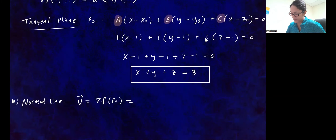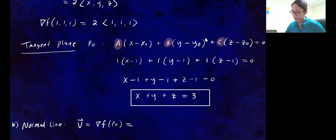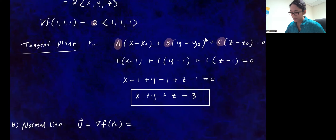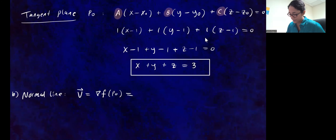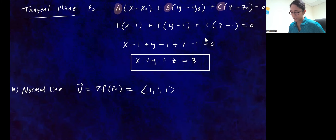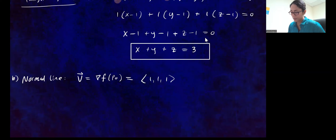We know that gradient vector is 2 times the components (1, 1, 1). You could use (2, 2, 2), but since it's just a scalar multiple, it's okay to use just (1, 1, 1) as our direction vector. Two times (1, 1, 1) is parallel to this, so we'll use direction vector (1, 1, 1).